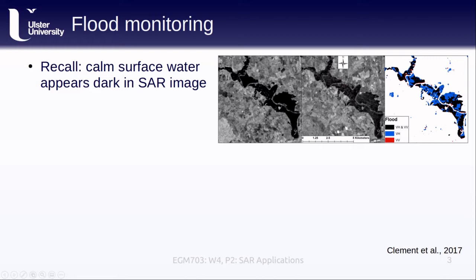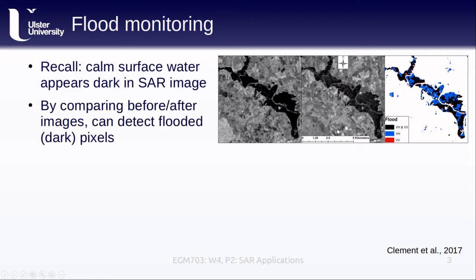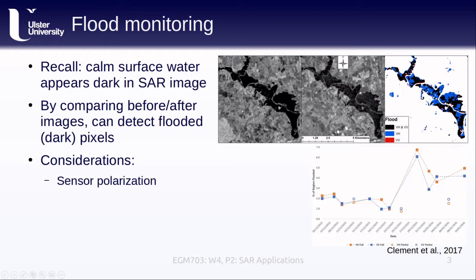Of course the presence of flood water is not the only reason that a pixel might appear dark, but if we compare images from before and during a flood we can usually detect flood waters as pixels that become significantly darker. We do have to take some different things into consideration, for example the sensor polarization. As we can see in the image and in the graph, there are differences in the flood detected area based on the sensor polarization, and in this example the cross-polarized signal tends to provide a higher estimate of flood area than the vertically polarized signal. We also need to consider speckle, the random phase noise that is present in SAR images, so we normally want to make sure that we do some kind of filtering before we try to classify SAR images.